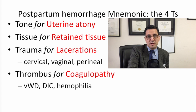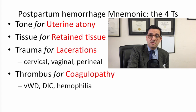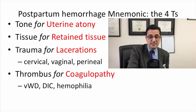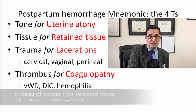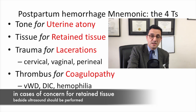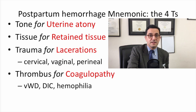The second cause of postpartum hemorrhage is retained tissue, or retained products of conception. Pieces of placenta or membranes can remain inside after delivery, so it's important to examine the placenta to ensure it is completely delivered with no missing cotyledons. If retained tissue is suspected, a bedside ultrasound should be done, and if needed, a dilation and curettage to remove remaining products.